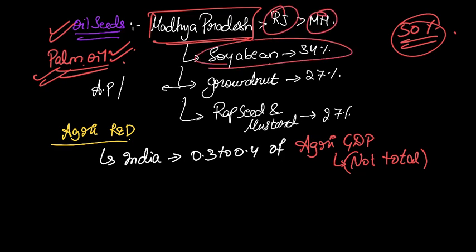On a national level, if you take a look at the production, soybean has the highest, followed by groundnut, and third one is rapeseed and mustard. Now mustard - is this a Kharif crop or a Rabi crop? Please post your answers in the comment section below.